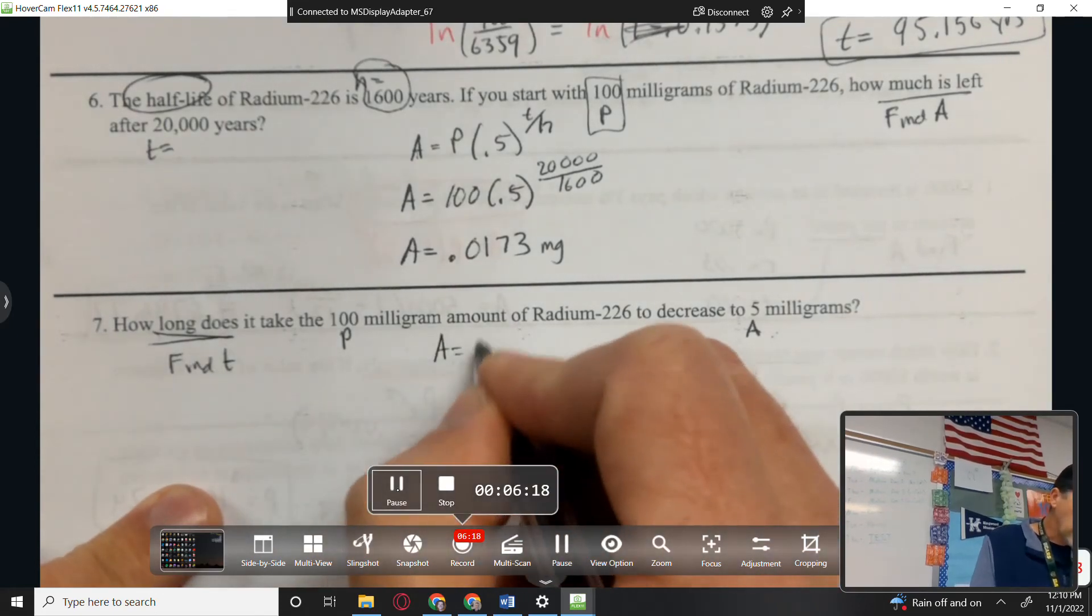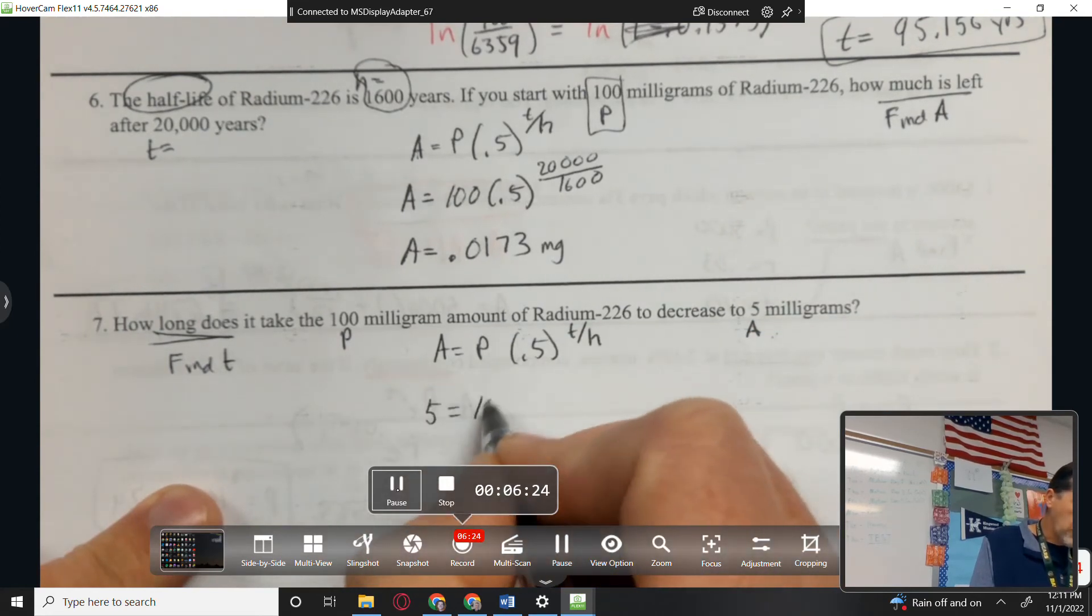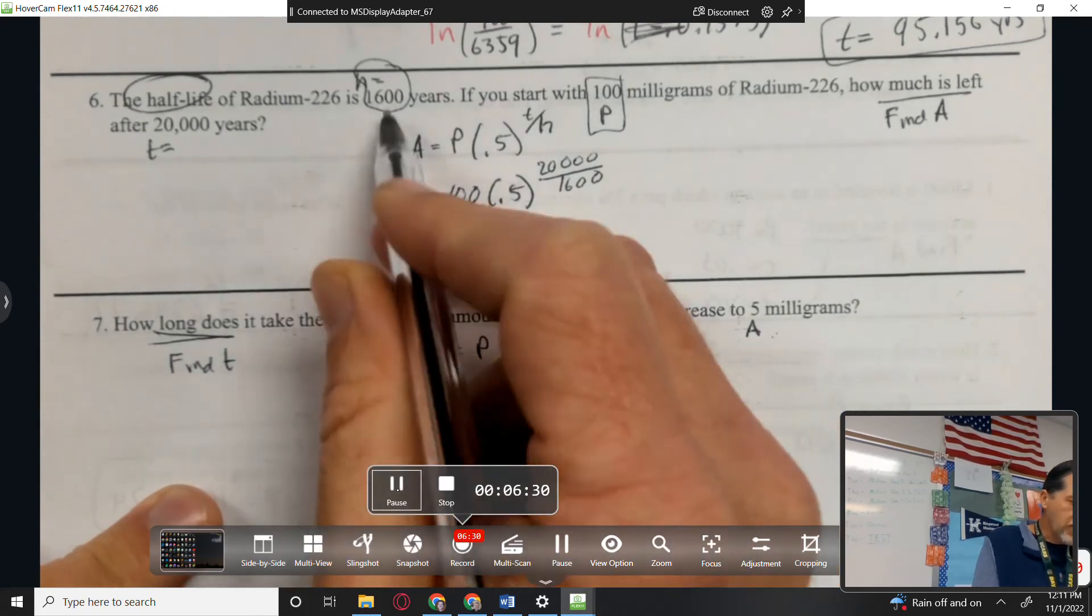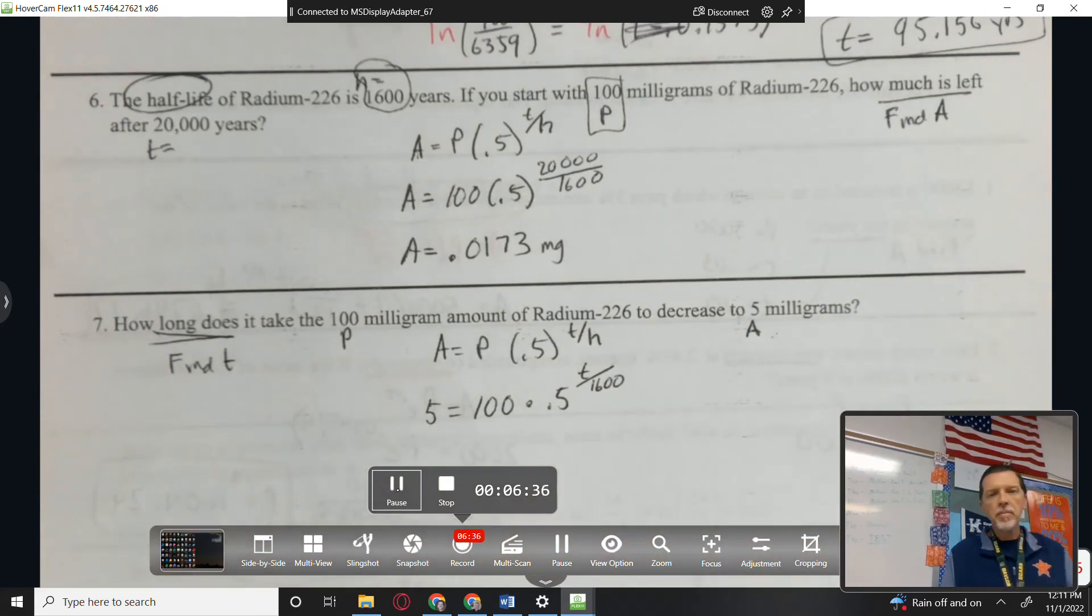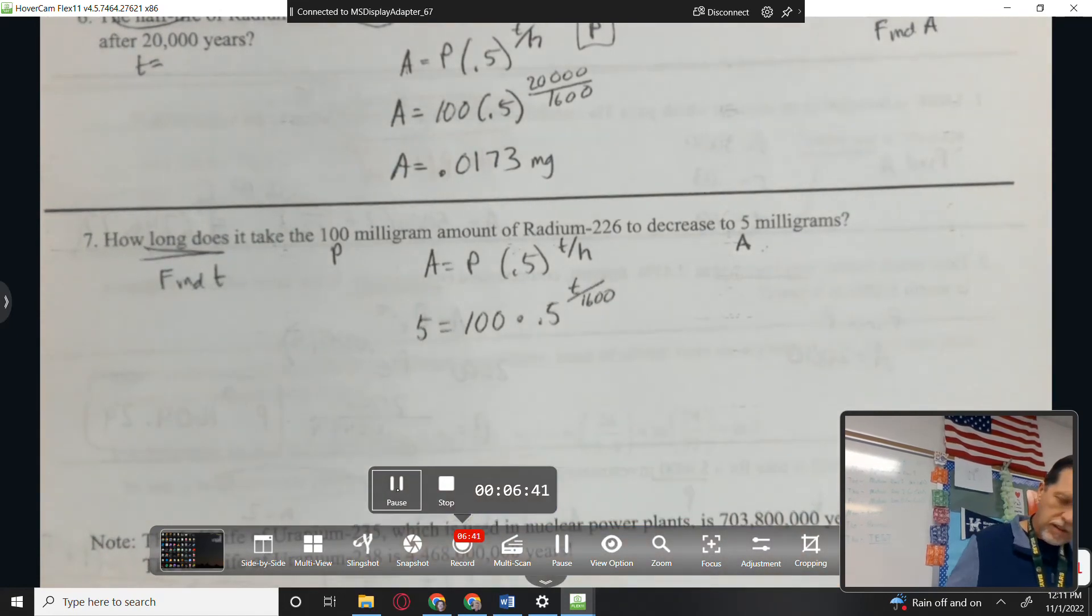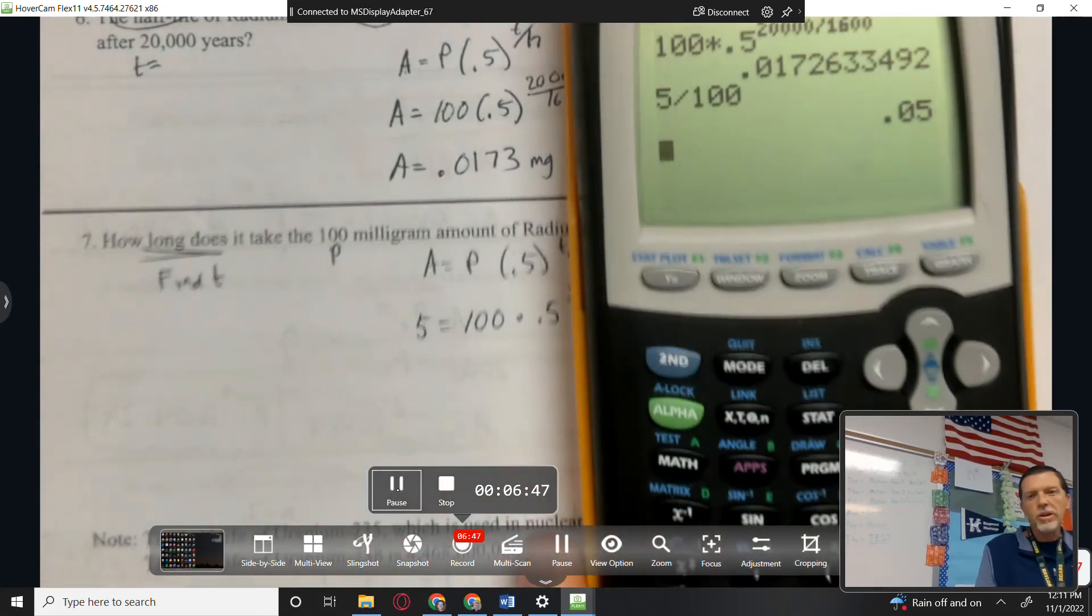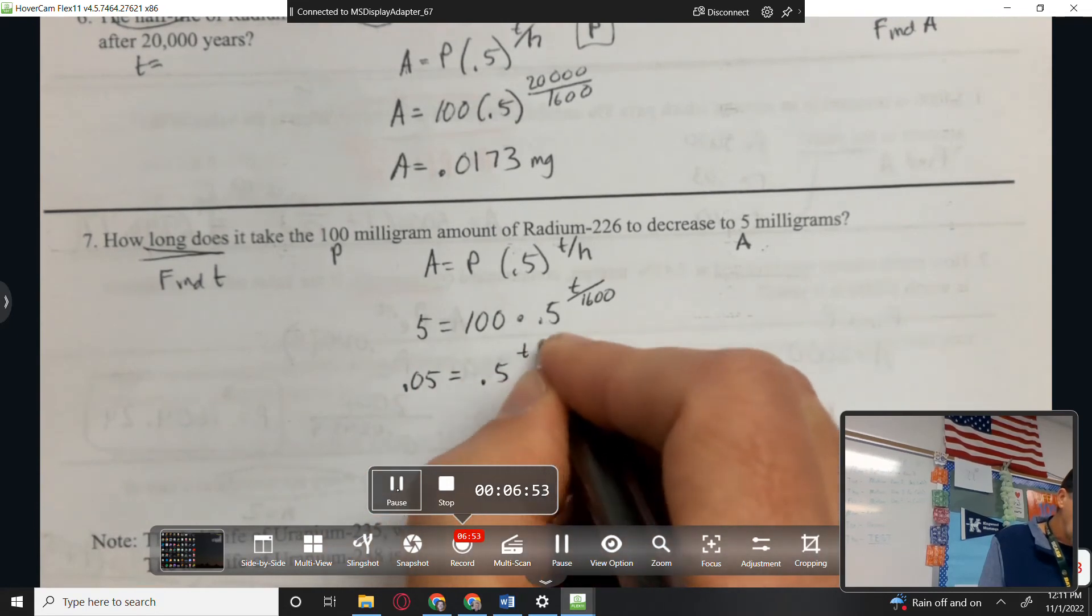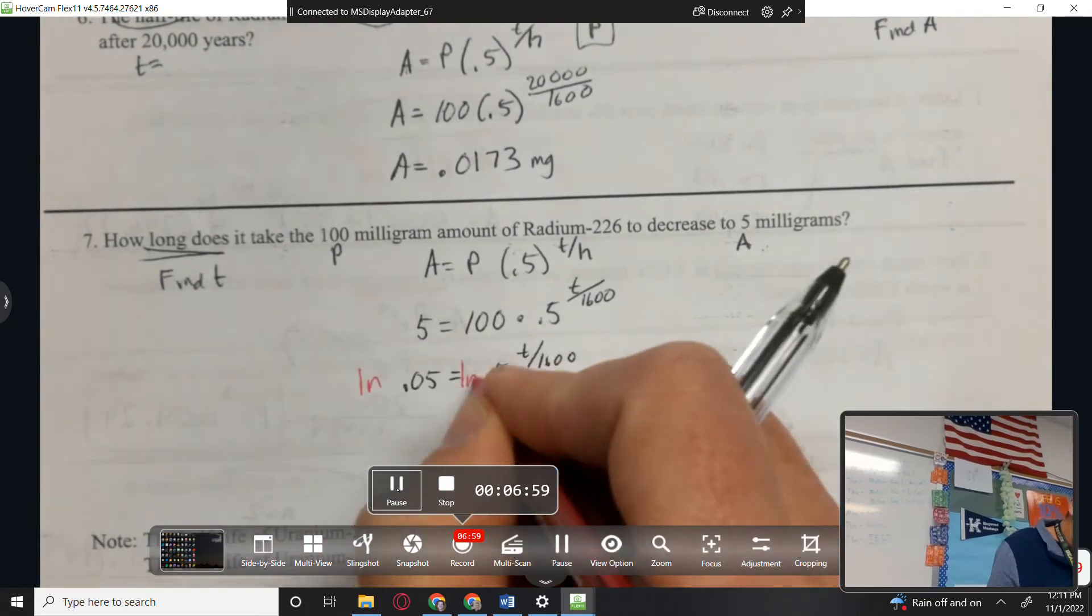Okay, so this is the same information, but now we're looking for find time. And we know that pre is 100 and the after is 5. So A equals P, 0.5 to the T over H, after is 5, pre is 100, 0.5, looking for T, over H is still the same because it's still this radium 226. Let's divide both sides by 100, 5 divided by 100, again that's one of those where you can leave it as 5 over 100, or 5 over 100 is a nice decimal, so I'd probably go ahead and do the work on that one.